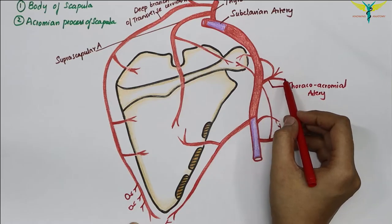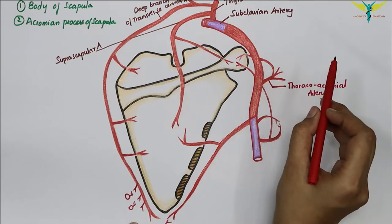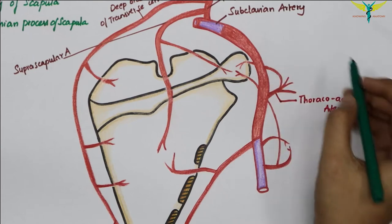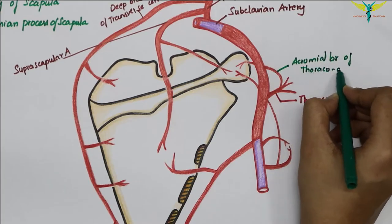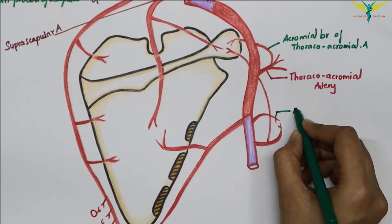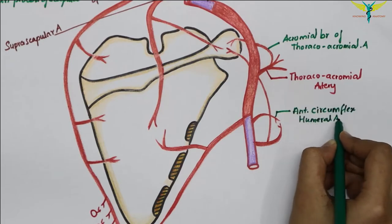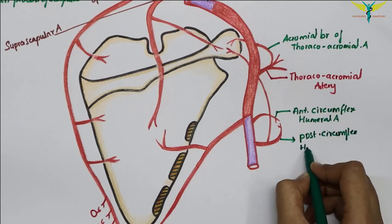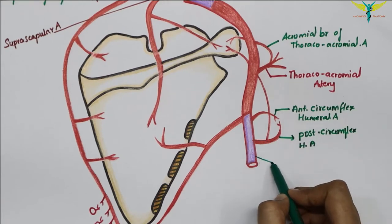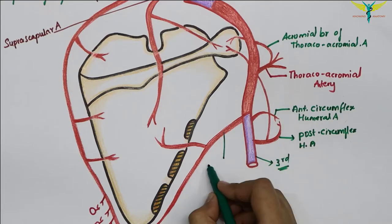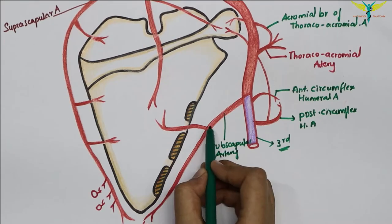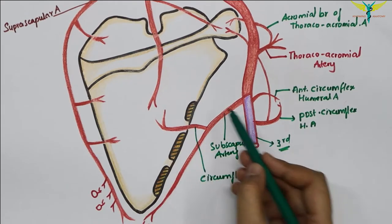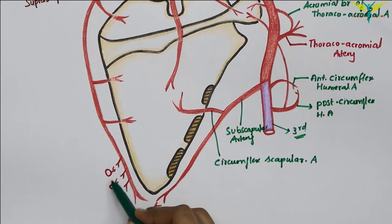The subclavian artery continues as the axillary artery. This artery is the thoracoacromial artery, which is a branch of the axillary artery. This branch is the acromial branch of the thoracoacromial artery. This is the anterior circumflex humeral artery and the posterior circumflex humeral artery. This is the third part of the axillary artery. This is the subscapular artery, and this is the circumflex scapular artery — circumflex meaning it winds around. These are the intercostal arteries.